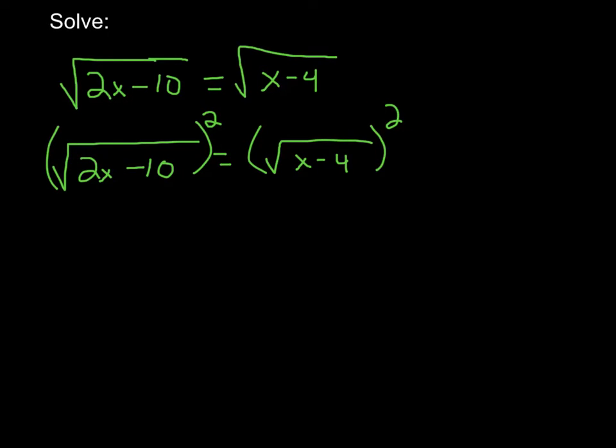Now we're left with whatever's underneath the radical: 2x minus 10 equals x minus 4. Now I need to get all of the numbers on one side, so I'm going to add 10 to this side.